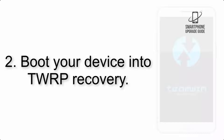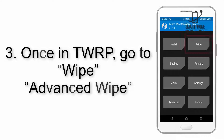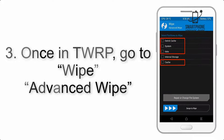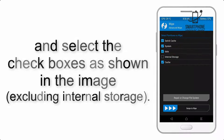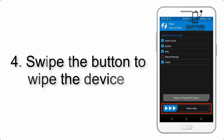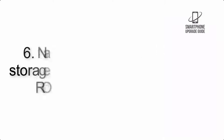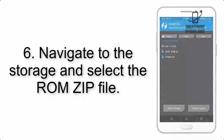Step 2: boot your device into TWRP recovery. Step 3: once in TWRP, click on Wipe, then Advanced Wipe, and select the checkboxes as shown in the image, excluding internal storage. Step 4: swipe the button to wipe the device.